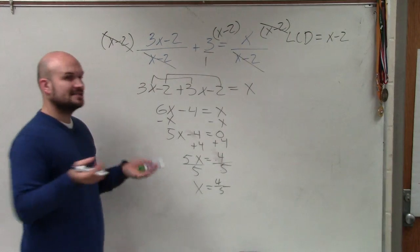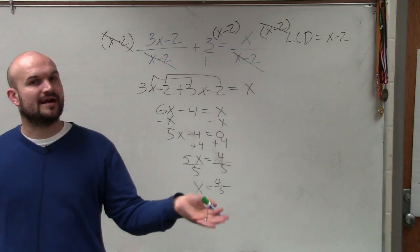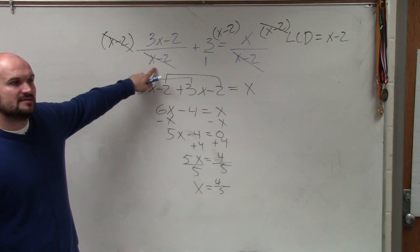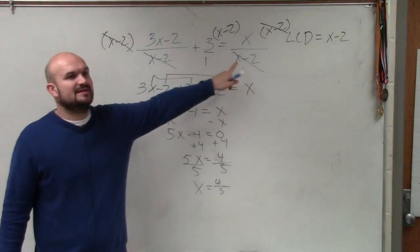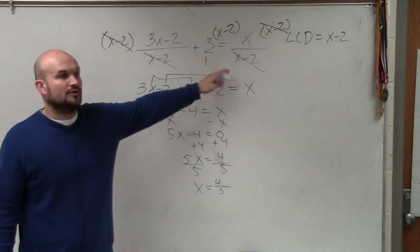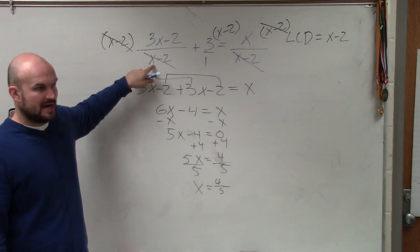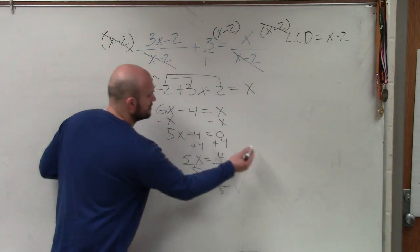Now, the last important step about this is we take our answer and we want to double check. Can 4 fifths go in for x? Would that make it 0 in any of my denominators? No. The only number that's going to make it 0 is if I put in 2, correct? So therefore, this solution works.